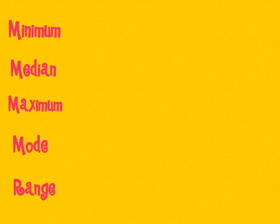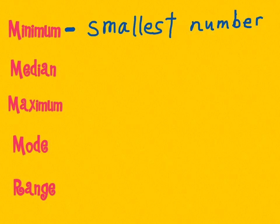So the minimum is the smallest number and you may know something that's mini is small, so the minimum is your smallest number. The other word you may have heard of is maximum, which is the opposite, it's the largest or greatest number.